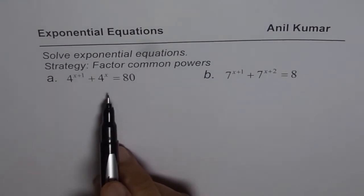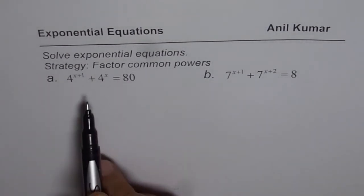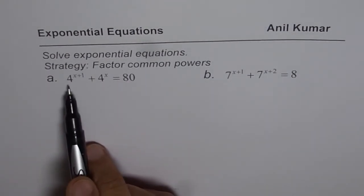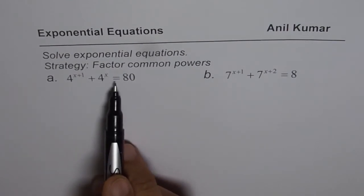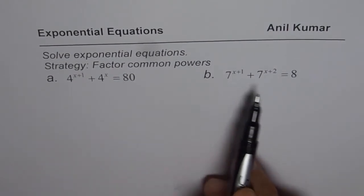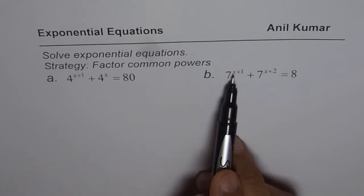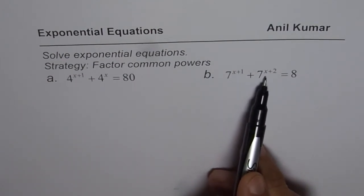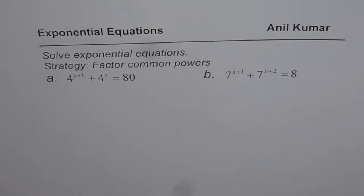Two examples will illustrate this kind of strategy. The first one is 4 to the power of x plus 1 plus 4 to the power of x equals 80. The other one is for you to practice: 7 to the power of x plus 1 plus 7 to the power of x plus 2 equals 8.